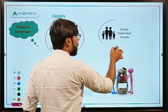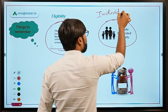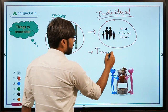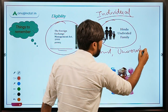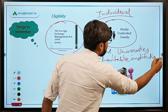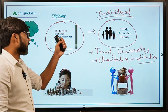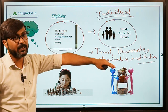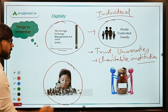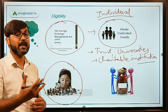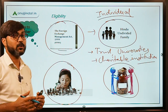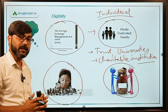The eligibility is bifurcated into: individuals, Hindu Undivided Families (HUF), Trusts, Universities, and Charitable Institutions — all of these are eligible. So basically, all persons residing in India as defined under FEMA 1999 are eligible. Additionally, there is also a provision of a joint account — two people can jointly hold a Sovereign Gold Bond together.